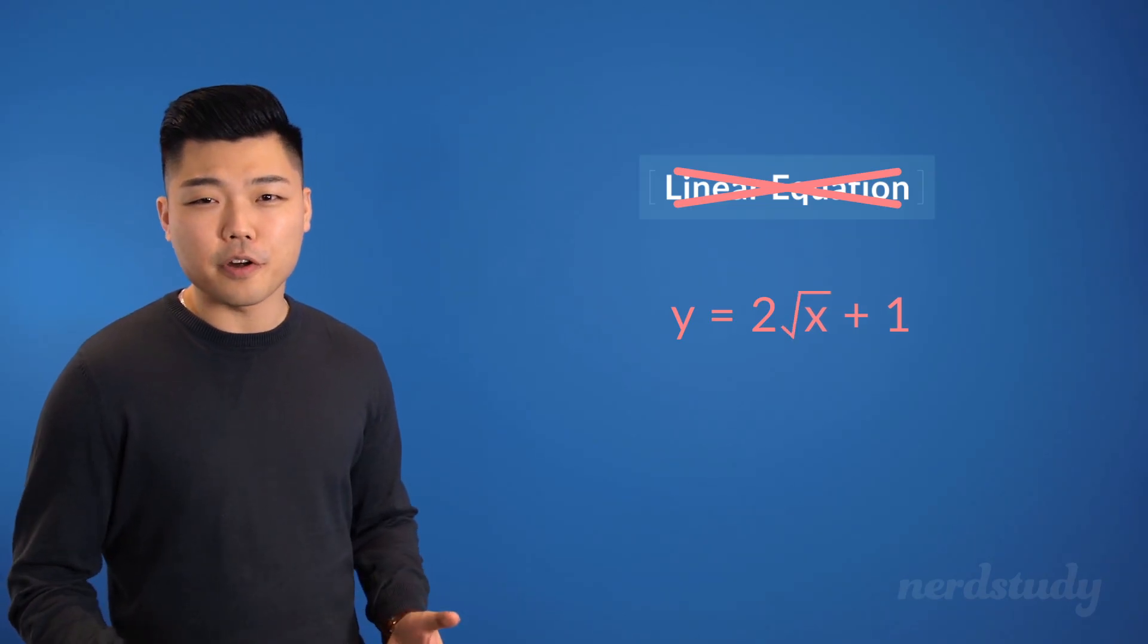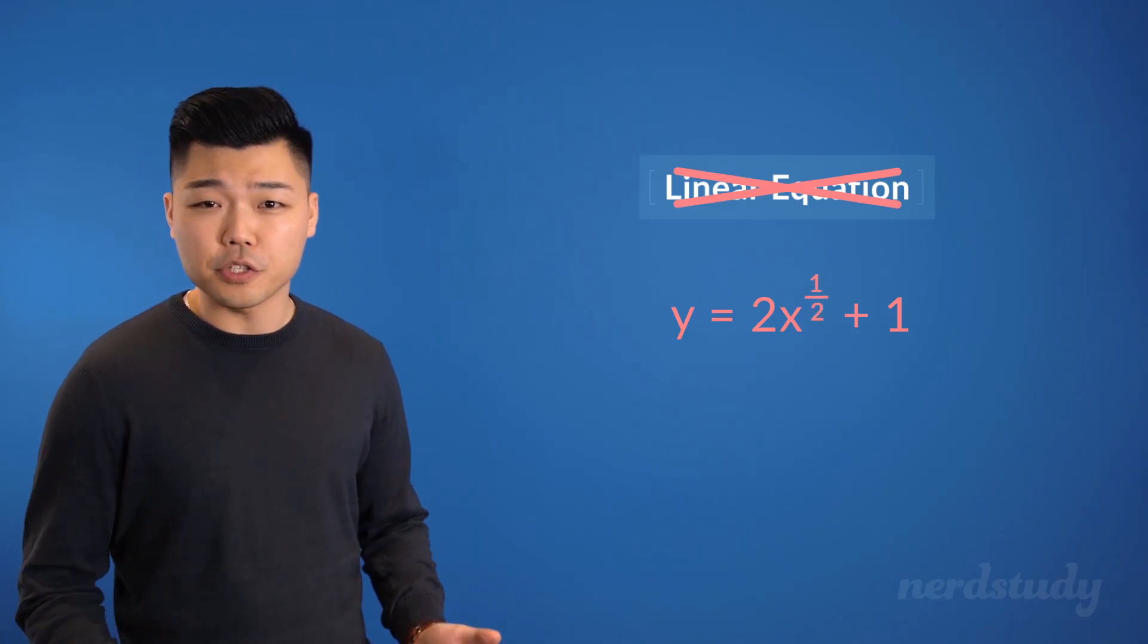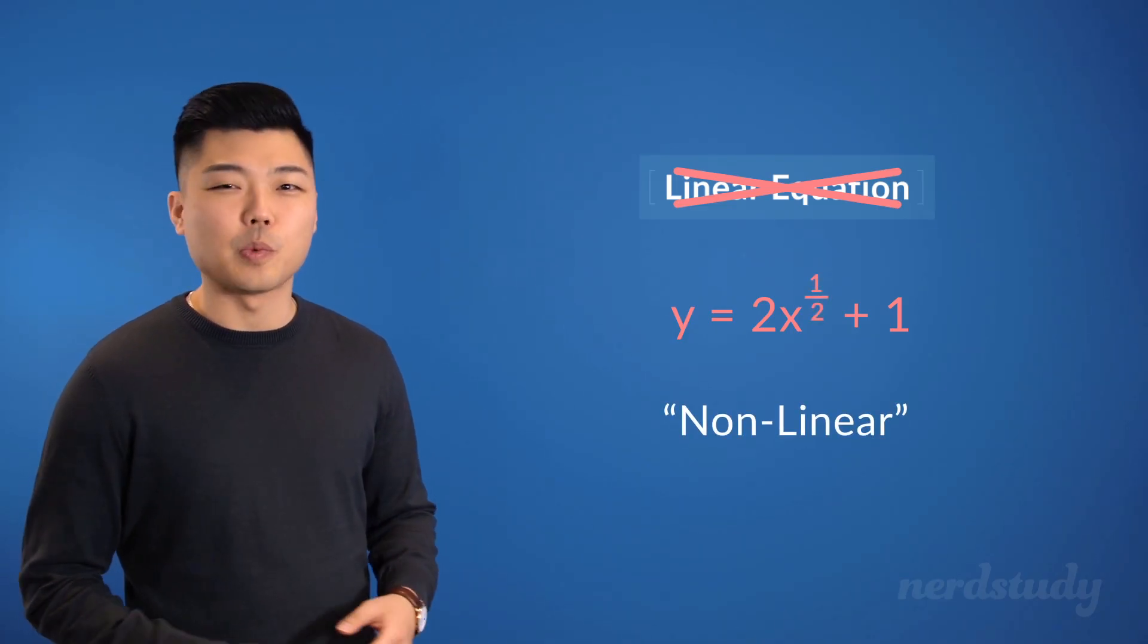Also, a square root on the variables, which is the same as having an exponent of 1 over 2, makes the graph non-linear as well.